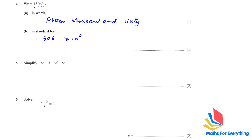Simplify by adding like terms together. We have 5c minus 2c and negative d minus 3d. 5 minus 2 gives 3c, and negative 1d minus 3d — since there is no number it means there's a 1 — so negative 1 minus 3 is negative 4d.